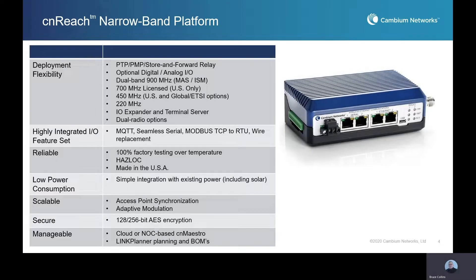Cambium's solution is called CN Reach. It's a narrowband platform that operates in multiple frequencies. In the unlicensed spectrum, we work in the 900 megahertz ISM band, and then also a number of licensed frequencies: 900, 700, 450, and 220 megahertz bands. In those licensed bands, oftentimes you're working with a 12.5 kilohertz or 25 kilohertz channel — very narrowband applications and low capacity.